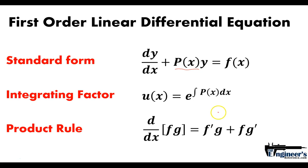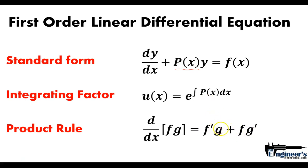Once we use the integrating factor, it puts the equation into the form of the product rule — meaning that the integrating factor times p(x) becomes a derivative of the integrating factor. This is actually the product rule, which makes it easy to take the antiderivative.